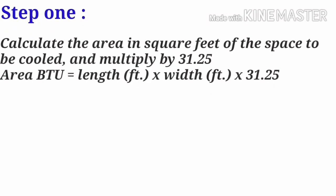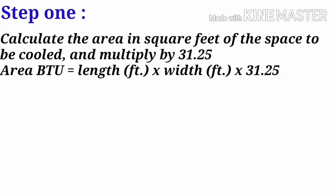Step 1: Calculate the area in square feet of the space to be cooled and multiply by 31.25. Area (BTU) equals length in feet multiplied by width in feet multiplied by 31.25.